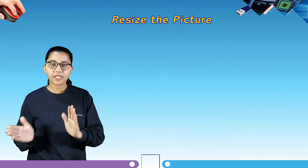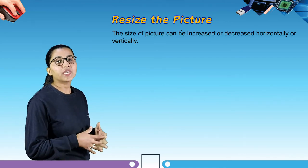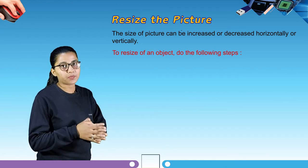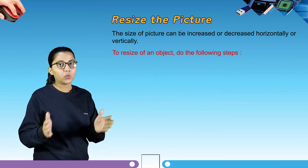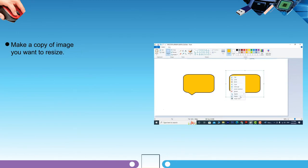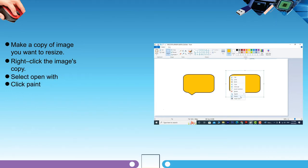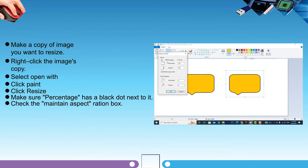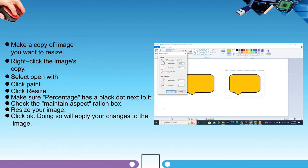Our next topic is resizing the picture. The size of a picture can be increased or decreased horizontally or vertically. To resize an object: make a copy of the image you want to resize, right-click the image copy, select open with, click Paint, then click resize. Make sure percentage has a black dot next to it, check the maintain aspect ratio box, resize your image, then click OK. This will apply your changes to the image. Now save your image.